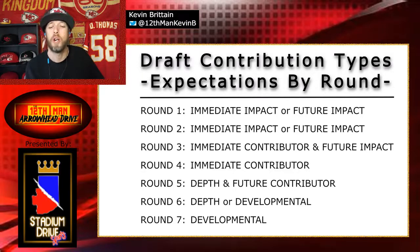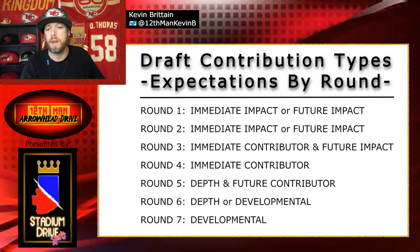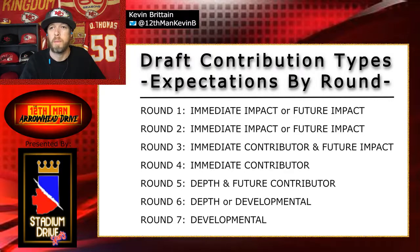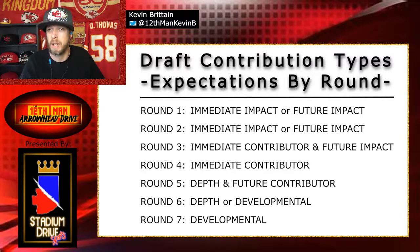In the first round of the NFL draft, your goal is to find an immediate impact player. Now, in certain circumstances, it could be that that immediate impact player is actually a future impact player. This is the type of thing we could be looking at if we choose to go wide receiver in the first round. If wide receiver Jameson Williams falls to us at number 30, he is definitely a special talent, but he is coming off of injury and may not be ready to impact the game immediately, so we'd have to look at him as a future impact player for the team.